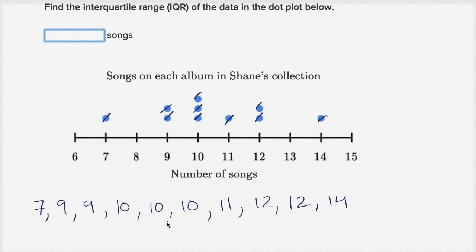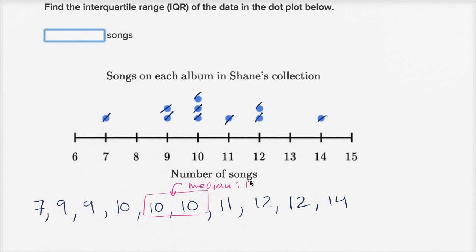I can immediately start calculating the median. I have ten numbers — an even number — so to calculate the median I'm going to look at the middle two numbers. The middle two numbers are these two tens, since I have four to the left and four to the right. The average of ten and ten is just ten, so the median is ten.